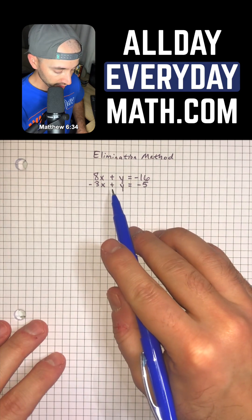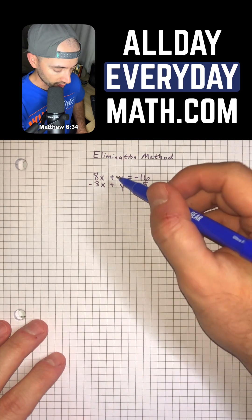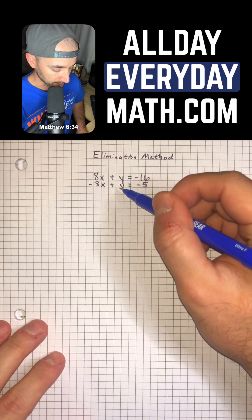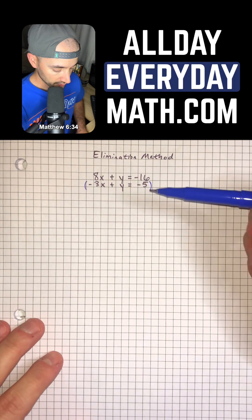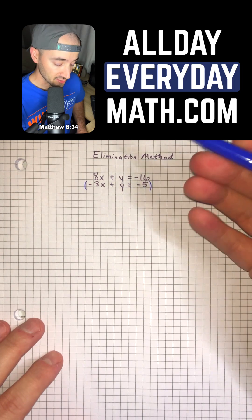And so we can do that really easily because we already have the same y term in both the top and bottom equation. So in order to get the y's to cancel out,